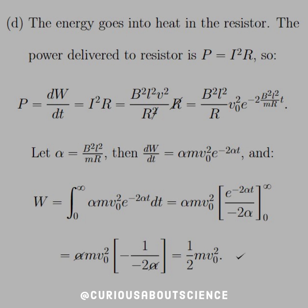Alright, so for part D then, the energy goes into heat in the resistor. The power delivered to the resistor is P equal to I squared R. So if we know that the power is the rate of change of work with respect to time, we could also set these two equations equal to each other, i.e. dW over dt is equal to I squared R.